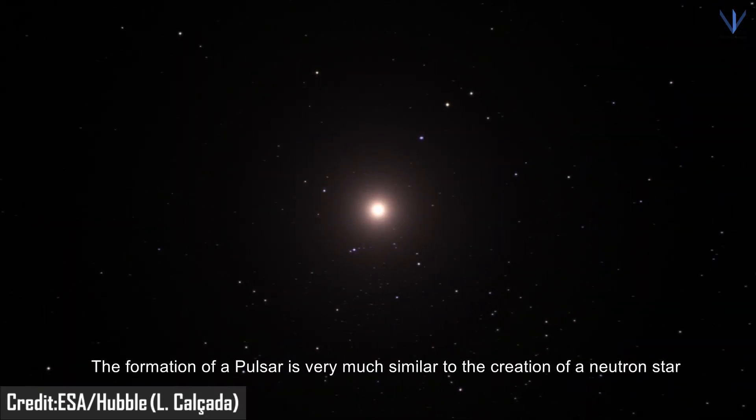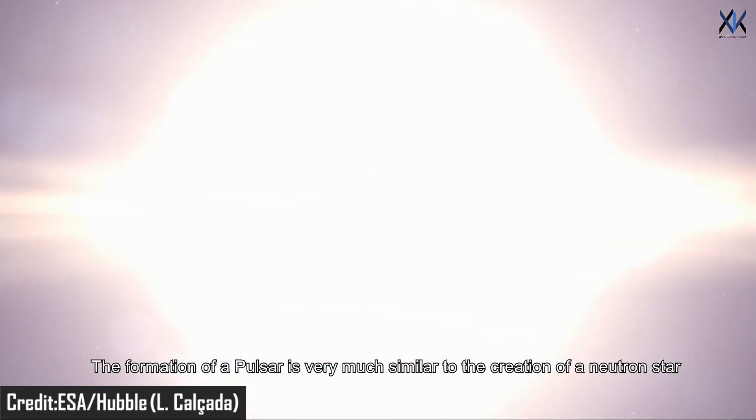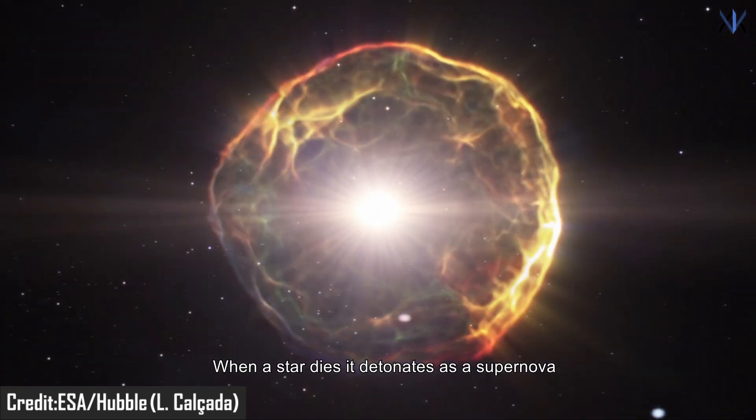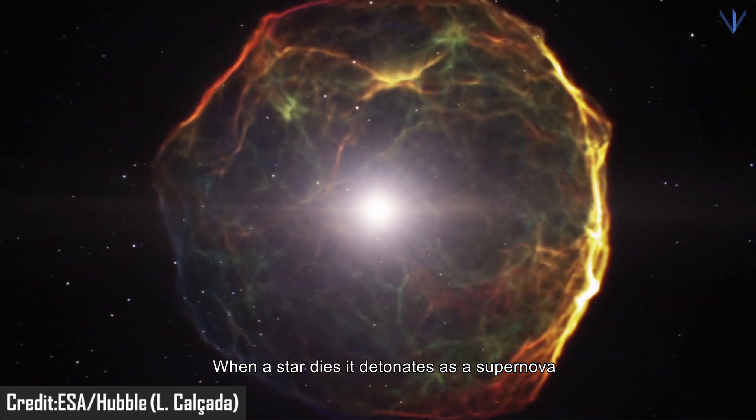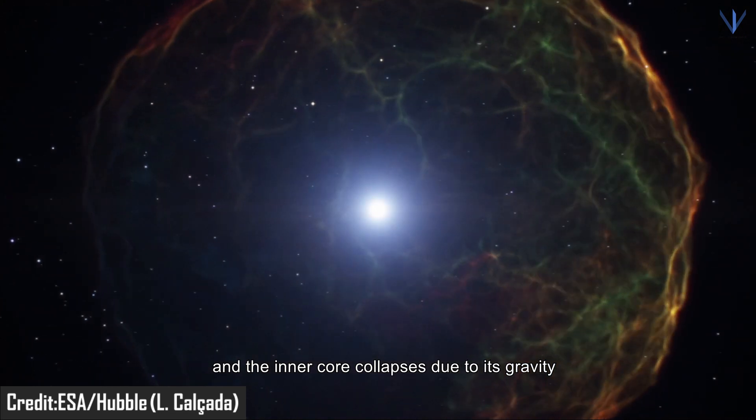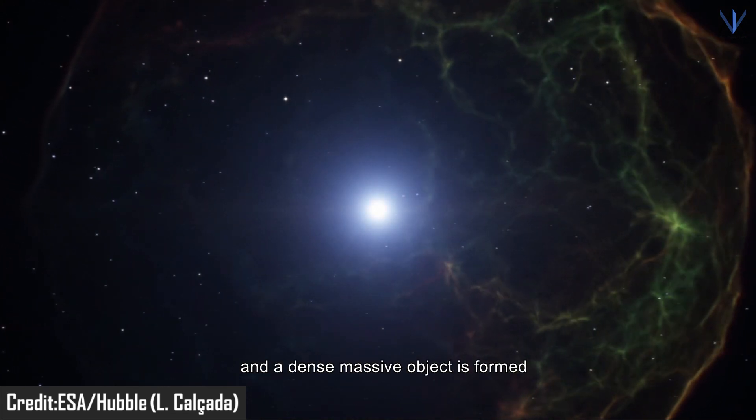The formation of a pulsar is very similar to the creation of a neutron star. When a star dies, it detonates as a supernova and the inner core collapses due to its gravity, forming a dense massive object.